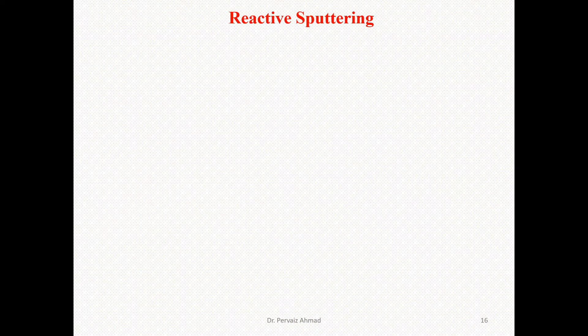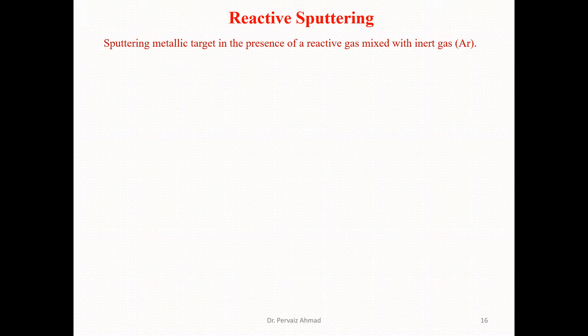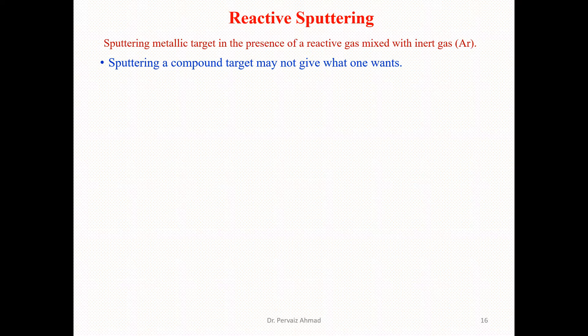Starting with reactive sputtering — it should be remembered that sputtering metallic targets in the presence of reactive gases mixed with argon gas. Whenever we are applying this sputtering process, that is reactive sputtering, we are doing the sputtering of metallic targets in the presence of reactive gas mixed with argon gas.